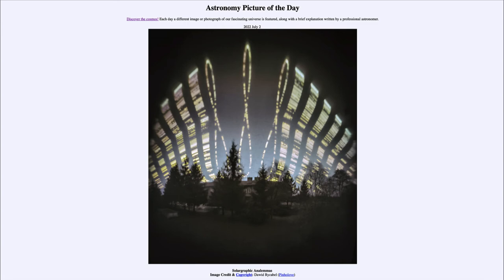The analemma to either side was taken an hour before or an hour after noon, showing how the position would change over the course of about an hour. The summer solstice is still at the top and the winter solstice still at the bottom. The lines to either side are 15-minute exposures taken over the course of the day, again showing how the sun's position would change.